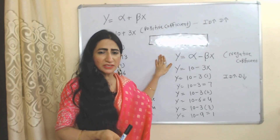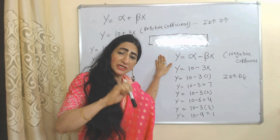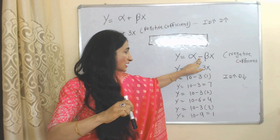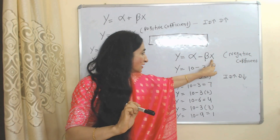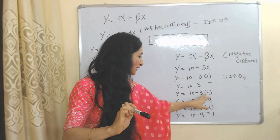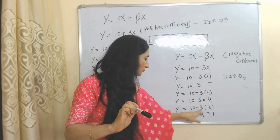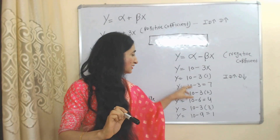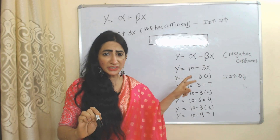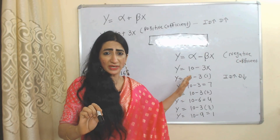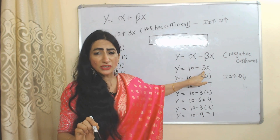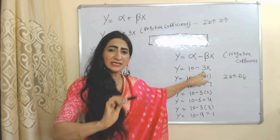A negative coefficient means when the independent variable increases, the dependent variable decreases, and you will see a minus sign. If we put 1 in place of X, Y will become 7. If we put 2 in place of X, Y will become 4. If we put 3 in place of X, Y will become 1. Here you can see 1 unit increase in X leads to a 3 unit decrease in Y. There is a negative relationship between dependent and independent variable, and this value shows how much the dependent variable falls due to an increase in the independent variable.